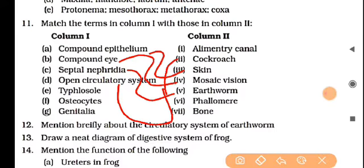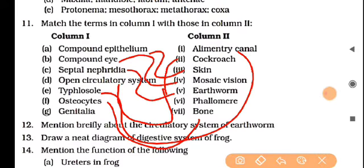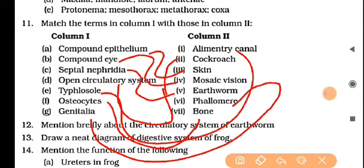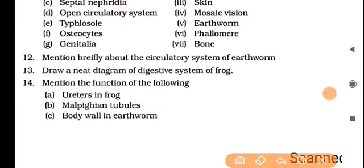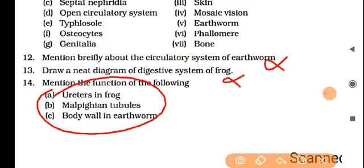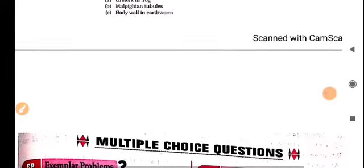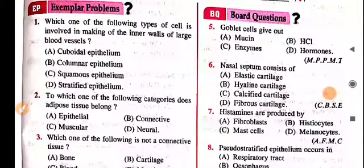Compound eye belongs to cockroach, and it is related to mosaic vision. Septal nephridia is part of earthworm. Open circulatory system is found in cockroach. Compound eye is also in cockroach — this question appears problematic. Tiflozoal is part of the alimentary canal and genitalia is part of the metamere. I hope all concepts are clear. Now the circulatory system of earthworm and the digestive system diagram are not in the current syllabus, so let's move on to MCQs.